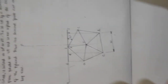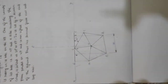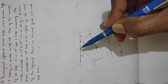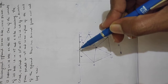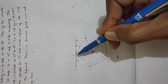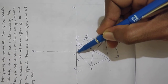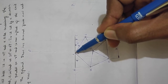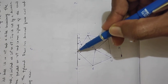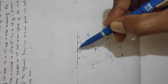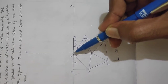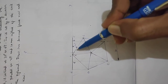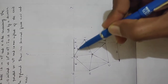This is our required true shape. As usual, we draw the XY line. This corner is on VP, so that corner is on the XY line. This corner is a plot point. Using a protractor, draw the 30 degree line with 30mm on the side.